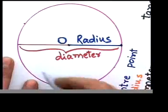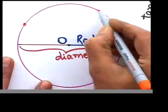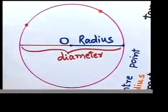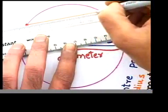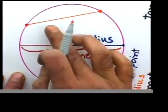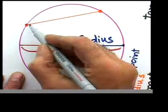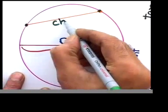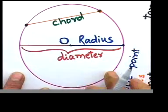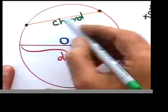On the circumference, if you choose any two points — suppose I chose that point and another point here — if I join those two points by means of a straight line, we call this particular straight line a chord. It's a chord which has a fixed length, and it is the line segment joining any two points on the circumference. Watch the spellings: C-H-O-R-D.